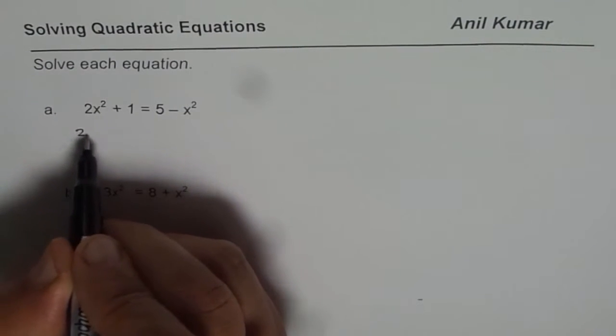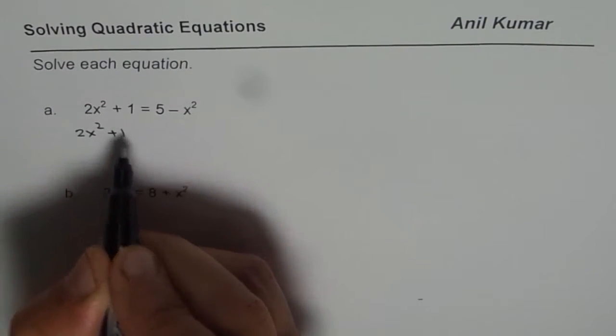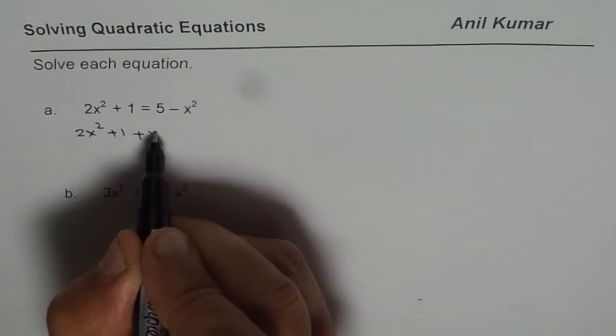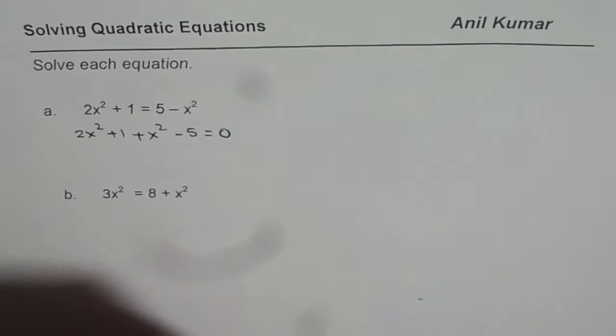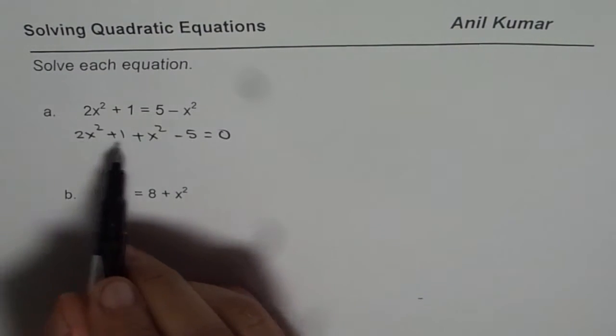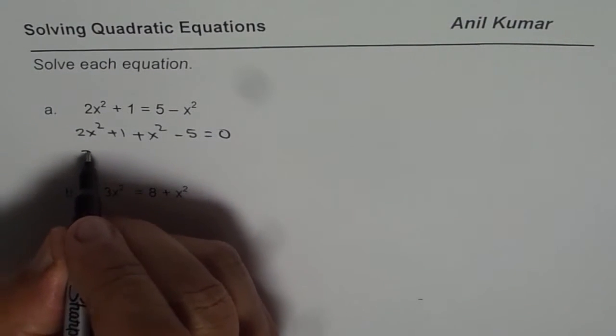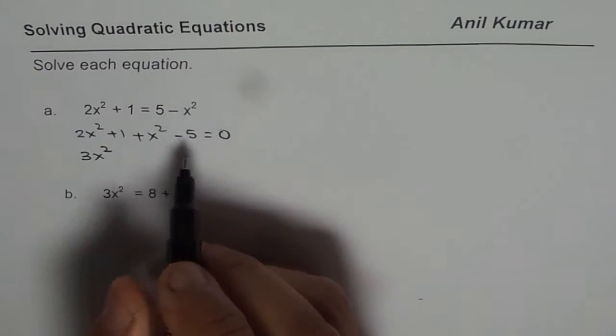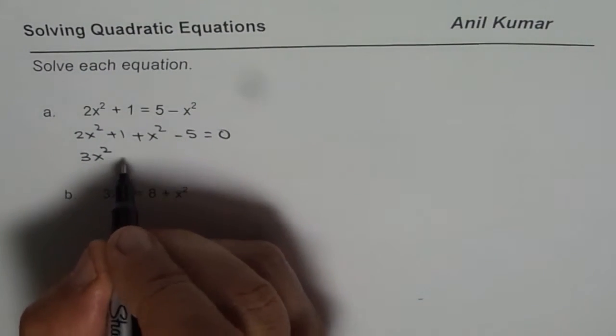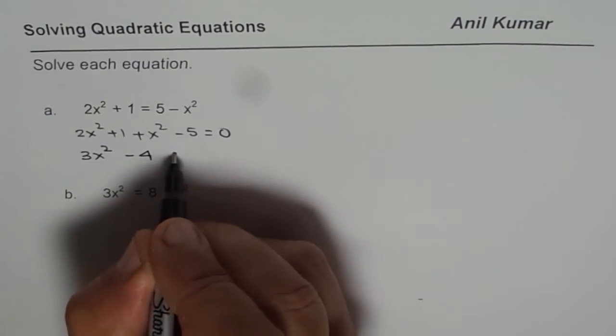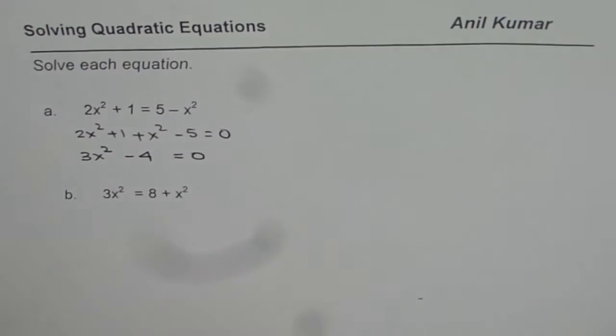So, we have 2x squared plus 1. We will bring this. So, we get plus x squared minus 5 equals to 0. Now, let us rearrange combining the like terms. 2x squared plus x squared is 3x squared. And we have numbers 1 and minus 5 as minus 4 equals to 0. So, that is how we can actually rewrite the equation.